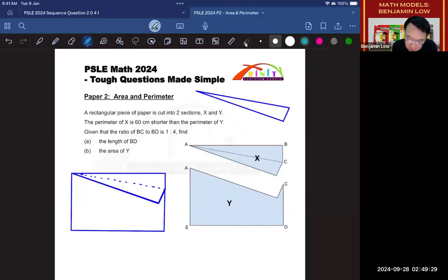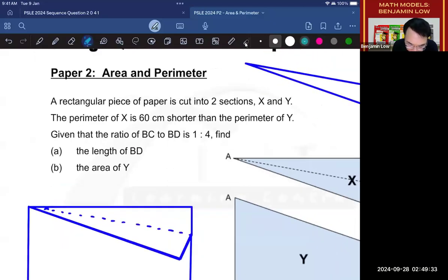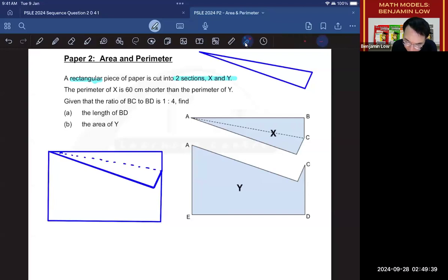So first we are underlining the keywords as we should do. The keywords are this: there's a rectangular piece of paper and it is cut into two sections, X and Y. As you can see here, there is X and there is Y. They say to you that the perimeter of X is 60 cm shorter than the perimeter of Y. And they then also give you the ratio of BC to BD as 1 is to 4. And the first question is, what is the length of BD? The second question is, what is the area of Y?